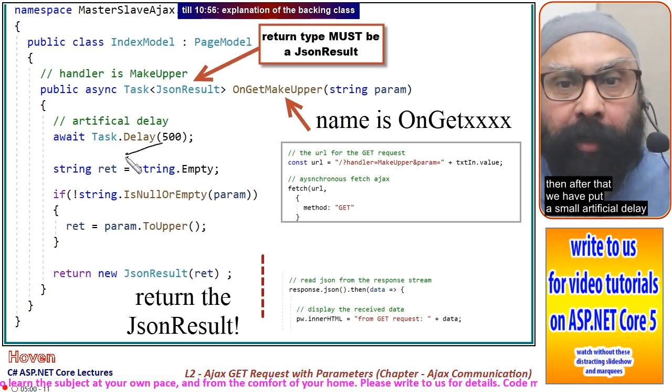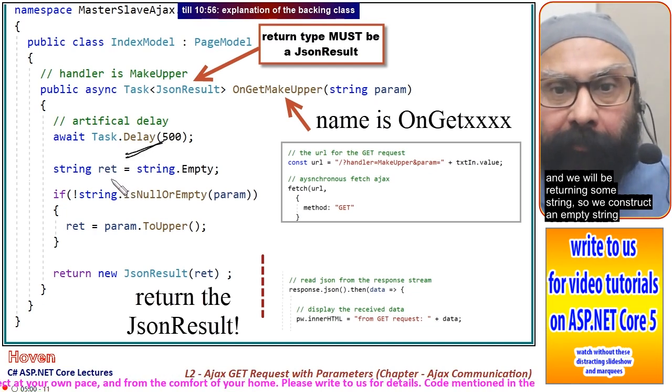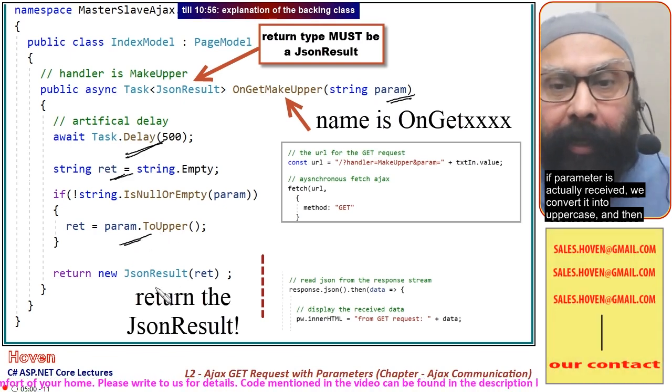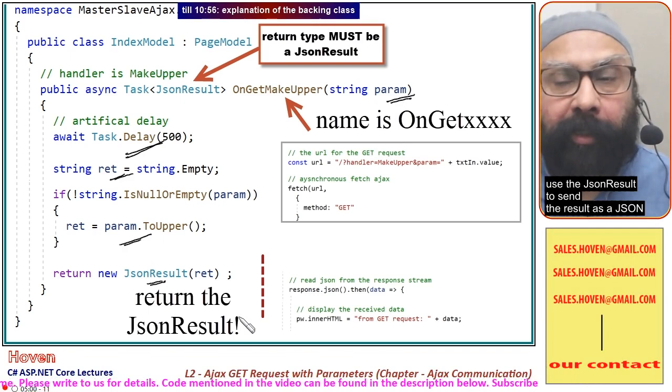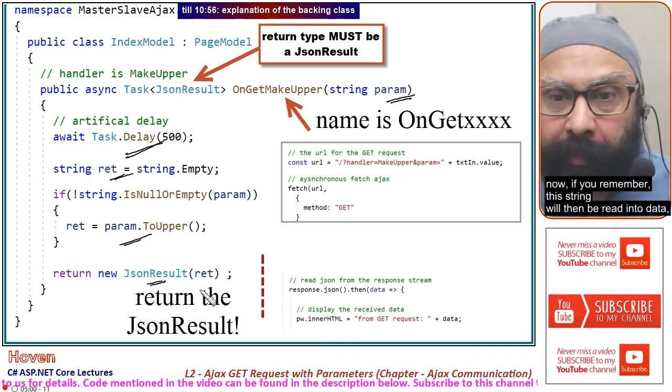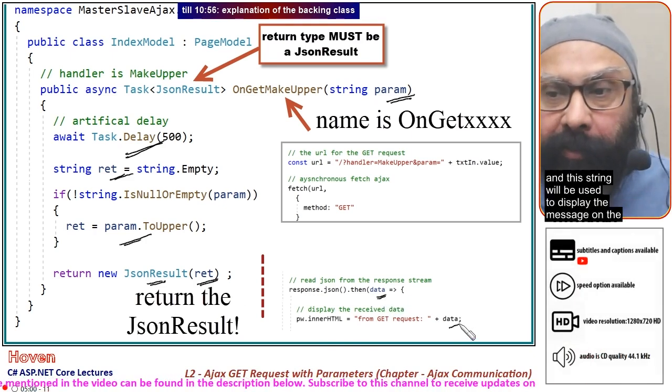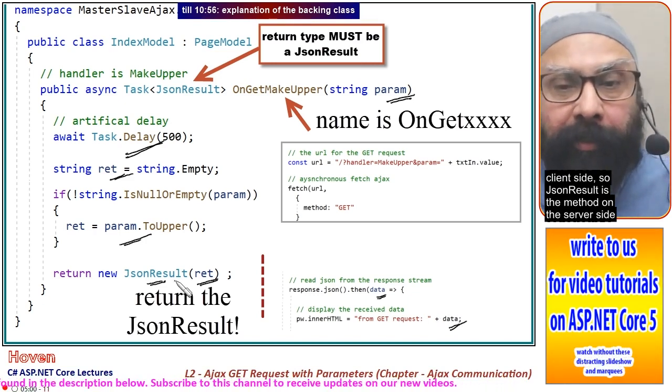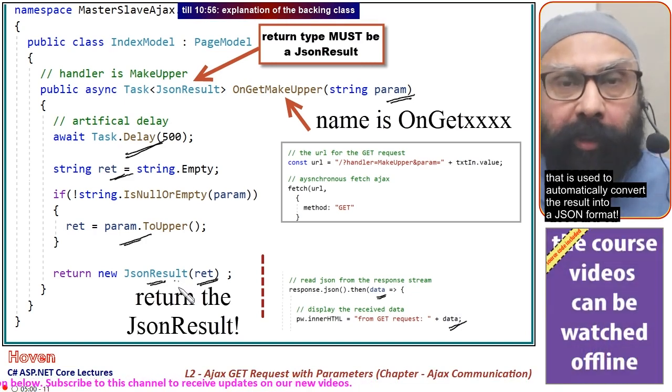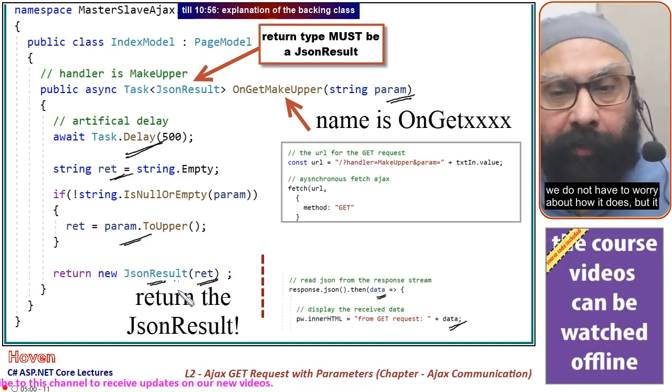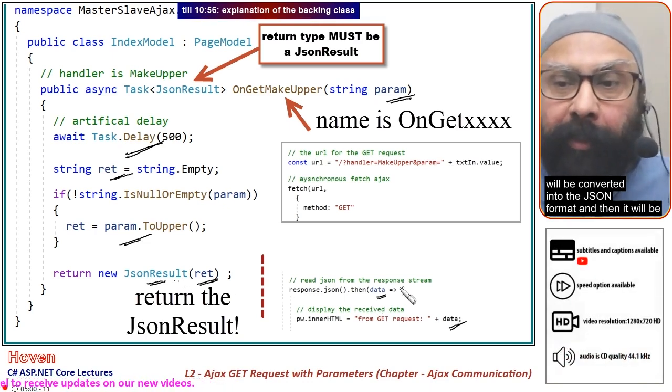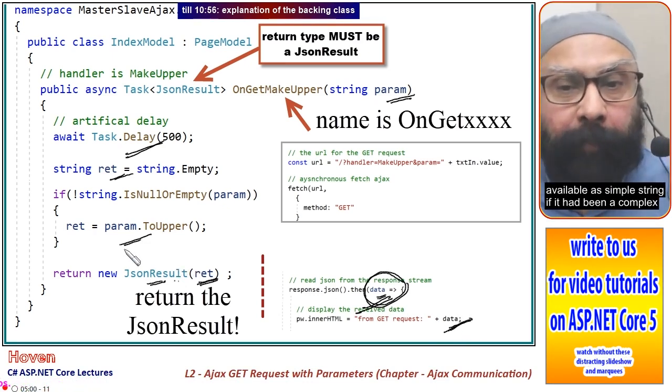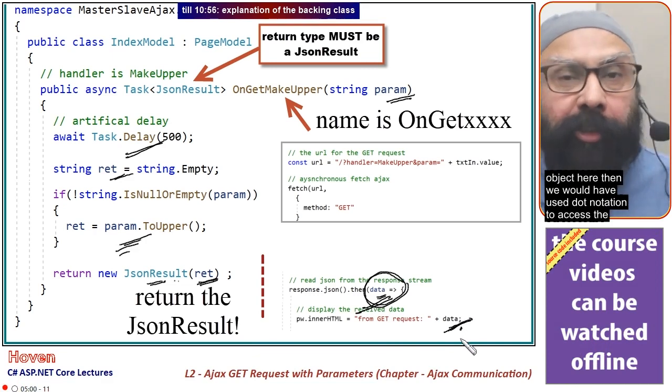We have an artificial delay and will return some strings. We construct an empty string. If the parameter is received, we convert it to uppercase and use JsonResult to send the result as JSON. This string will then be read into data and displayed on the client side. JsonResult automatically converts the result into JSON format, and it will be available in this data.